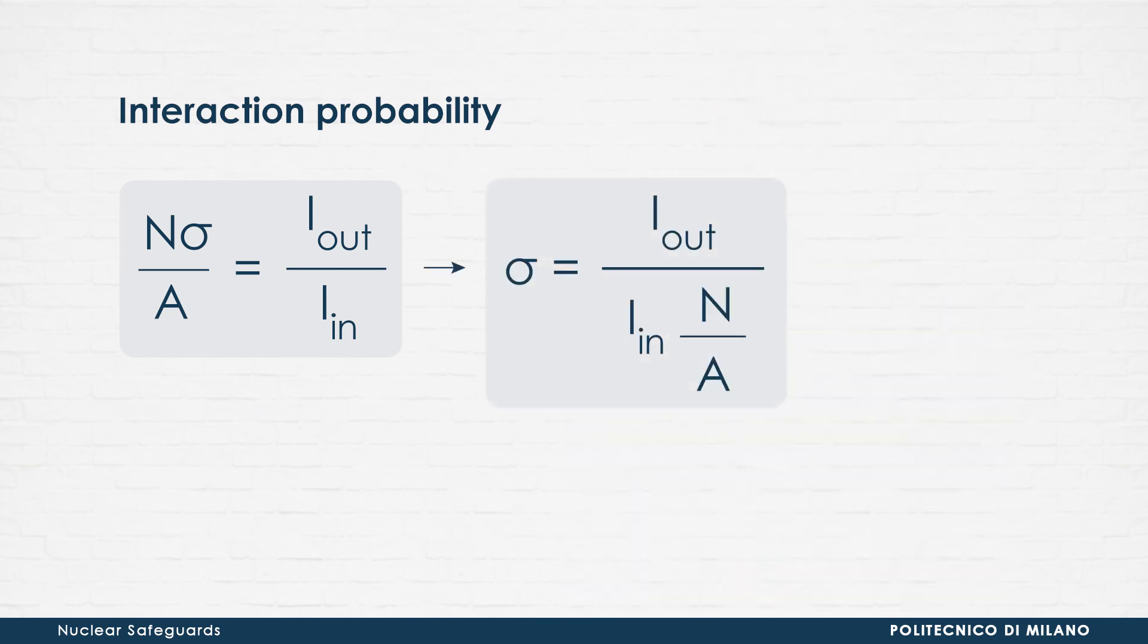By definition, the reaction cross-section has the dimensions of an area. In nuclear physics, it is usually measured in barn, where one barn corresponds to 10 to the minus 24th square centimeters.